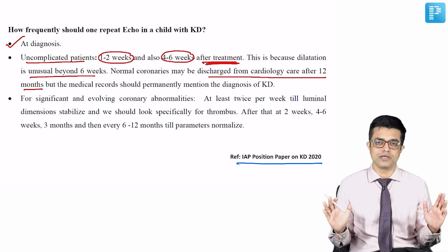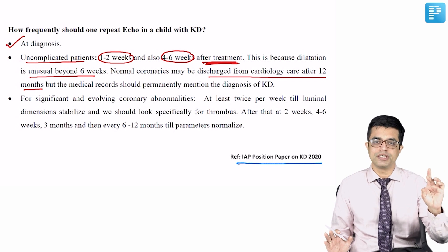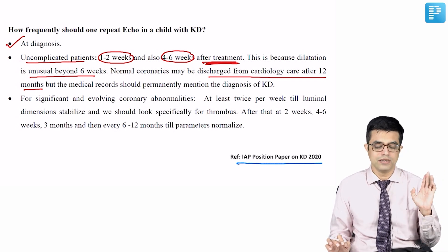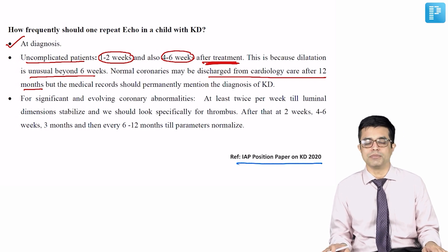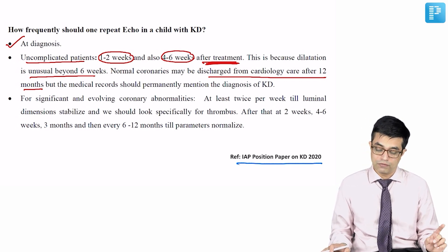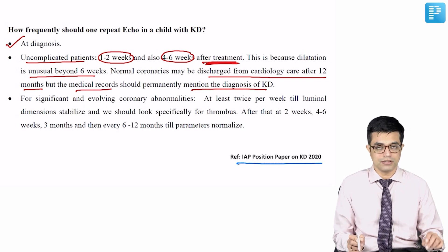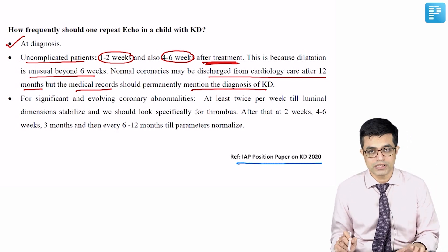If ecocardiography is normal, maximum you can follow up the patient in cardiology unit for 1 year. After that, the patient need not go to the cardiovascular department further. However, the medical records should permanently mention that the patient had Kawasaki disease.